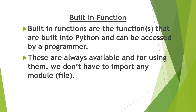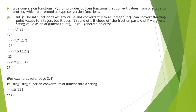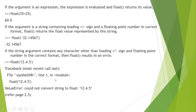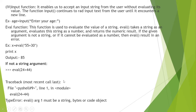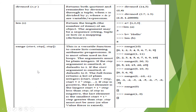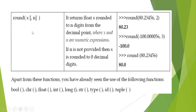Built-in functions are functions that are built into Python and can be accessed by a programmer. They are always available, and you do not have to import any module to use them. Examples include int, str, and float for type conversions, input for user input, and also abs, max, and min — these are all ready-made built-in functions.